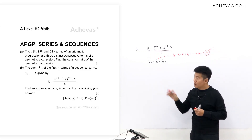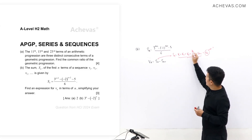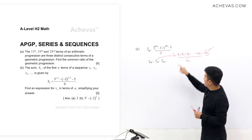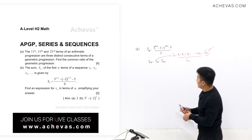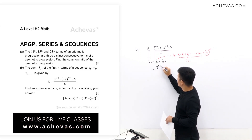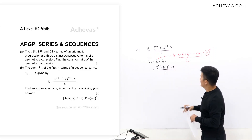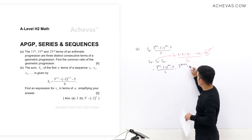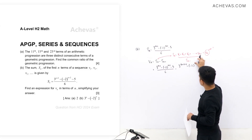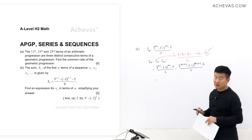So V_n = S_n − S_(n-1). S_n = [3^(n+2) − (−2)^(n+2) − 5] / 6, and S_(n-1) is obtained by replacing n with (n-1): [3^(n+1) − (−2)^(n+1) − 5] / 6. Since they share the same denominator, we combine them.